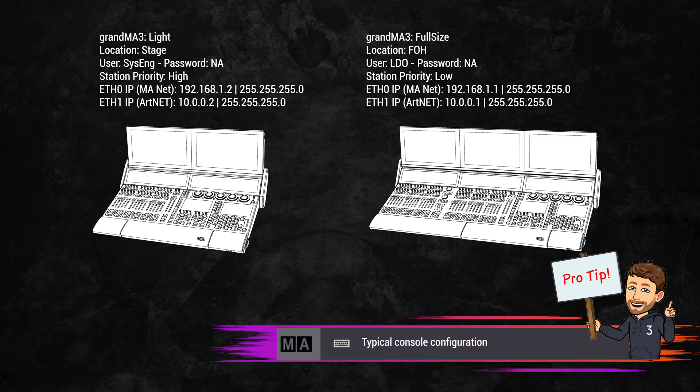That way, in case anything happens to the console running the show, there's a predetermined structure for who takes over as the global master on the network. Having said that, if you're pairing an on-PC station with a console, I'd suggest putting the console as the higher priority.